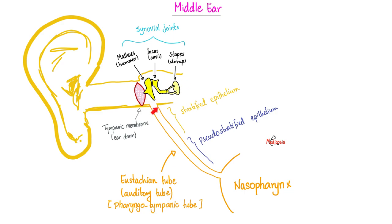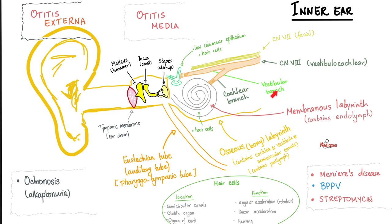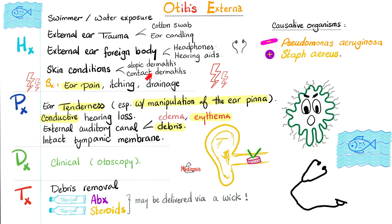Since both cholesteatoma and otosclerosis are diseases of the middle ear, both can lead to conductive hearing loss. Remember: if there's a problem in the external ear or the middle ear, it gives conductive hearing loss. But if the problem is in the inner ear, you develop sensorineural hearing loss. Otitis externa, caused by foreign bodies, trauma, or water exposure, can also cause conductive hearing loss — that's a problem in the external ear, whereas today's topic is a problem in the middle ear.